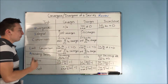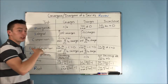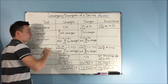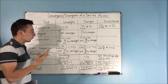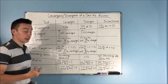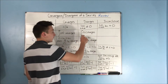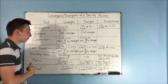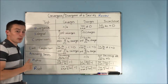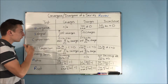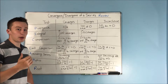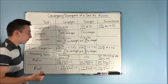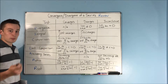The integral test: we're just comparing the series to an improper integral. And if that integral converges, then we know that our series converges. If the integral diverges, then we know that the series diverges. Next is the comparison test.